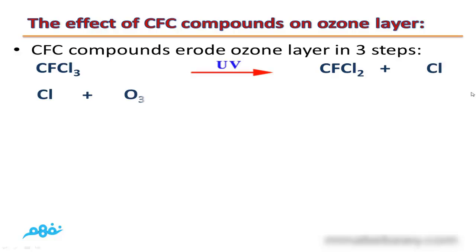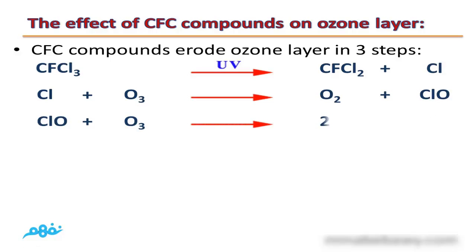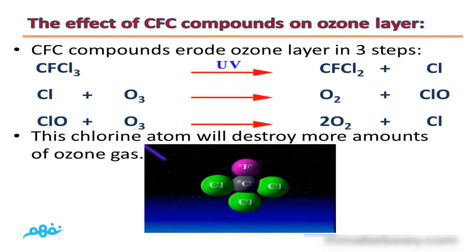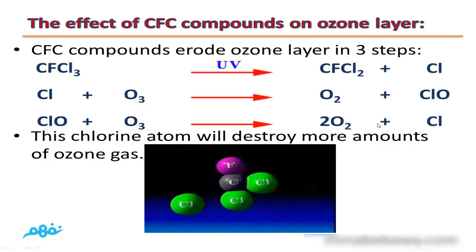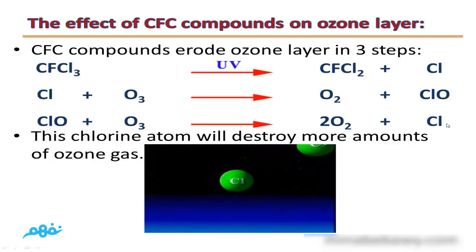This free chlorine atom will react with an ozone molecule, forming one molecule of oxygen and one molecule of chlorine monoxide. This chlorine monoxide will then react with another molecule of ozone, and two oxygen molecules will be formed plus one chlorine atom.